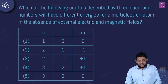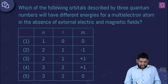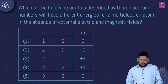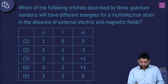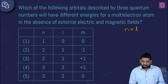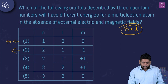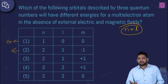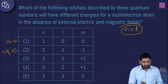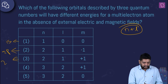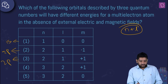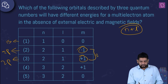This question asks which of the following orbitals, described by three quantum numbers, will have different energies for a multi-electron atom in the absence of electric and magnetic fields. Using the Aufbau principle, energy depends on the n + l value. The first option has n=1, l=0 — that's 1s. The second has n=2, l=1 — that's 2p (m=−1, a specific orientation). The third also has n=2, l=1, another 2p orientation, so those two have the same energy.